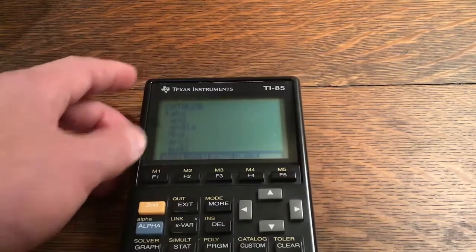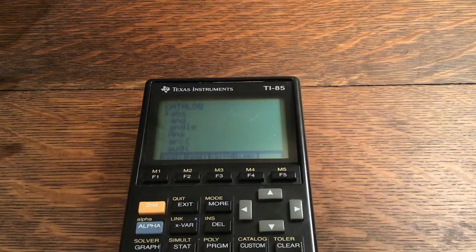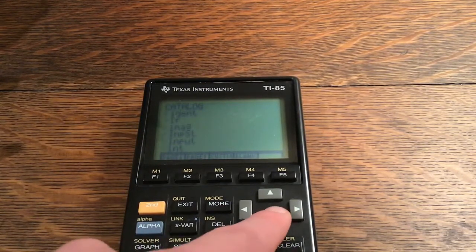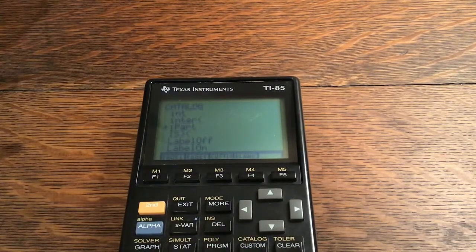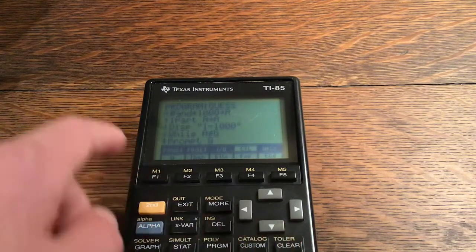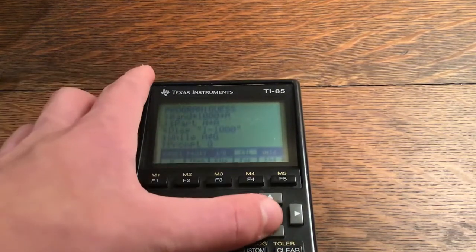And then the I part command, you can also go second custom, and that takes you to the catalog, remember. And you click alpha and I, and I believe that will take you to the I part, which is right there. So then you click enter, and I'm just going to click clear to exit that part.